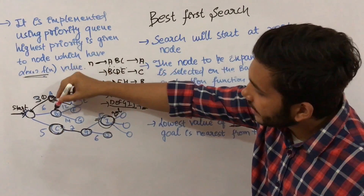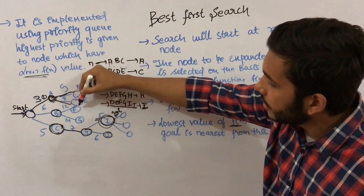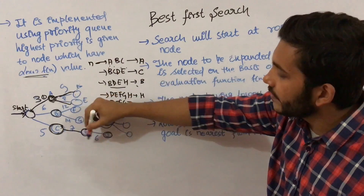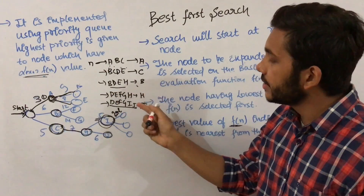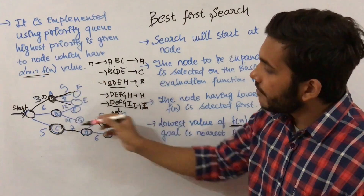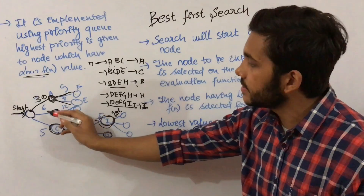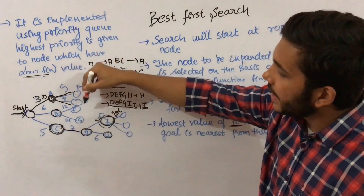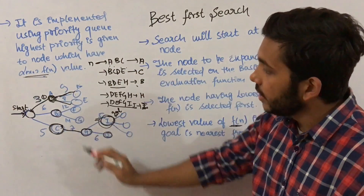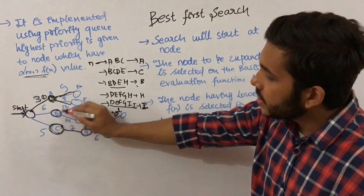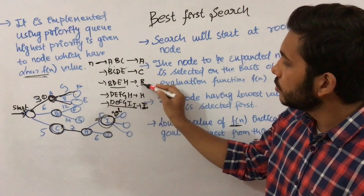The current open list has B, D, E, and H — none of which have been expanded yet. B has value 6, D has value 9, E has value 8, and H has value 7. The lowest value is for B at 6, so B is chosen next.